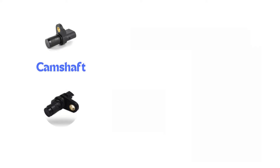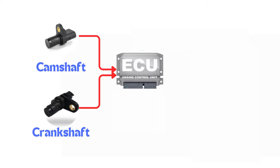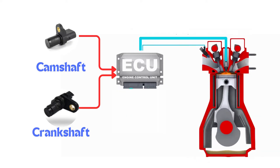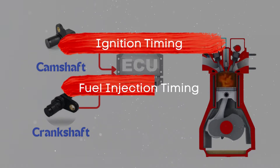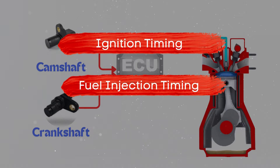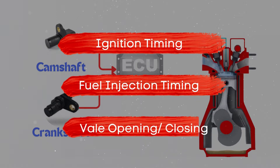The camshaft position sensor measures the position of the camshaft, while the crankshaft position sensor measures the position of the crankshaft. Both of these sensors send crucial data to the ECM, which uses this information to control ignition timing, fuel injection timing, and valve timing.